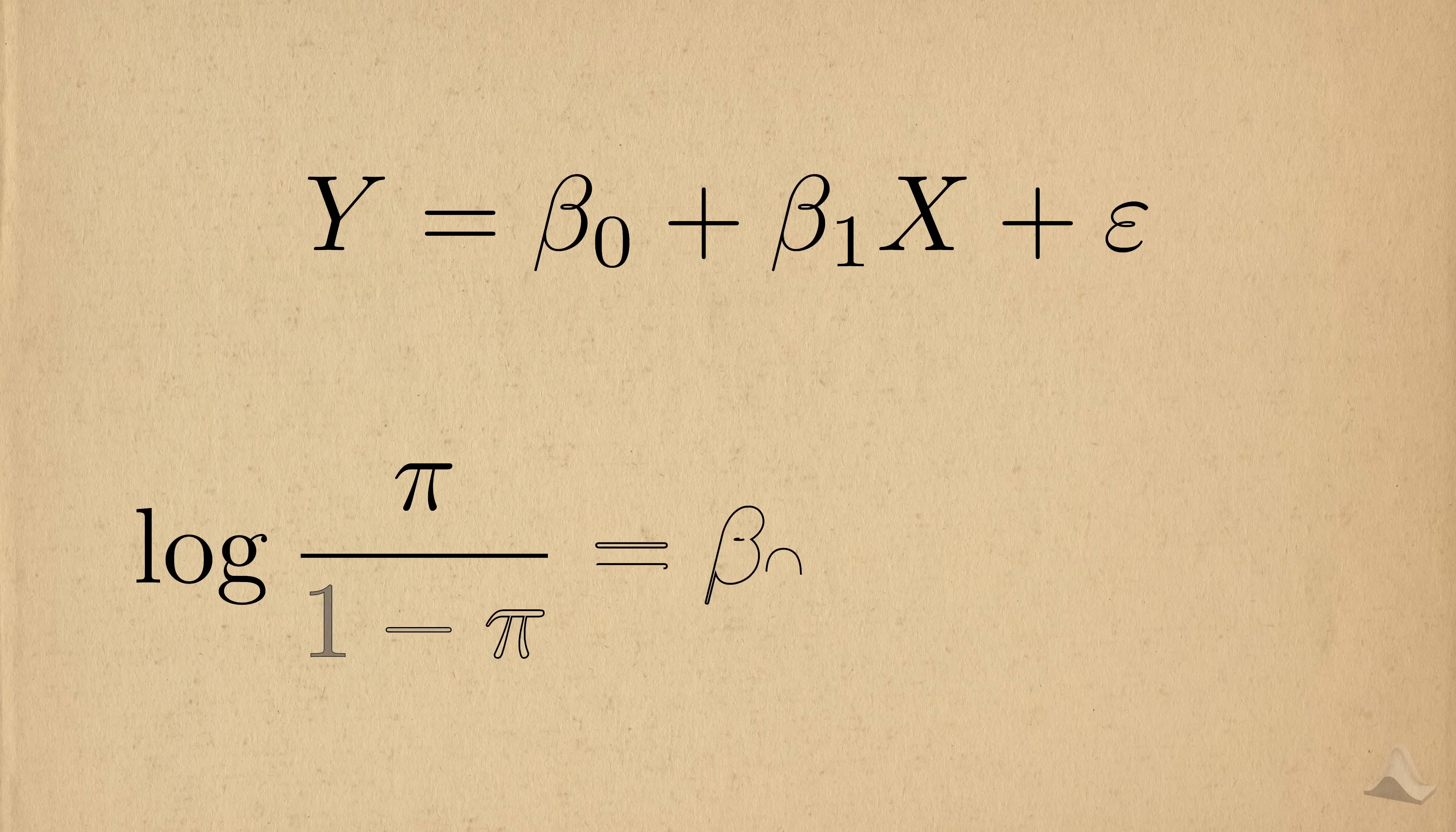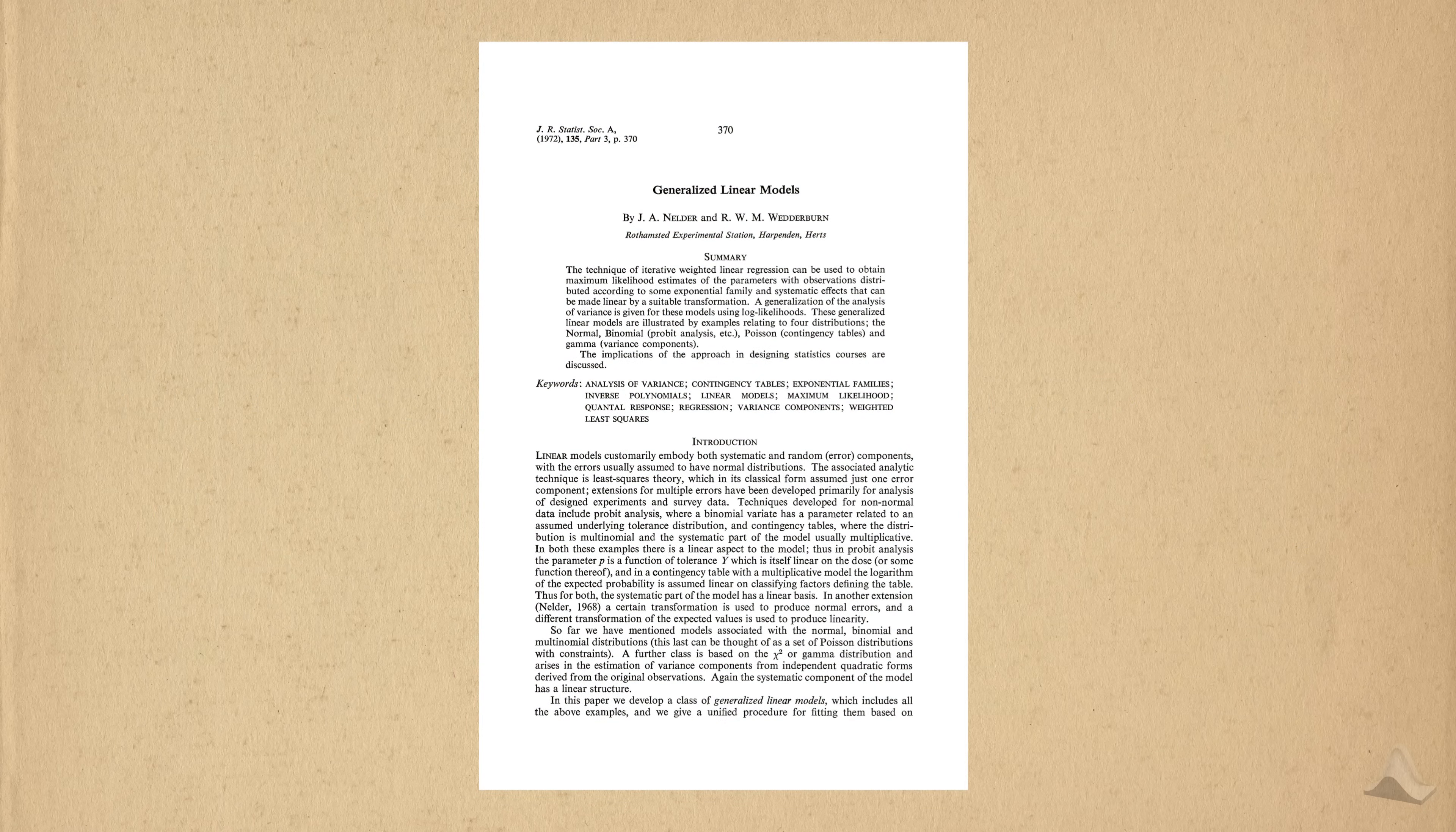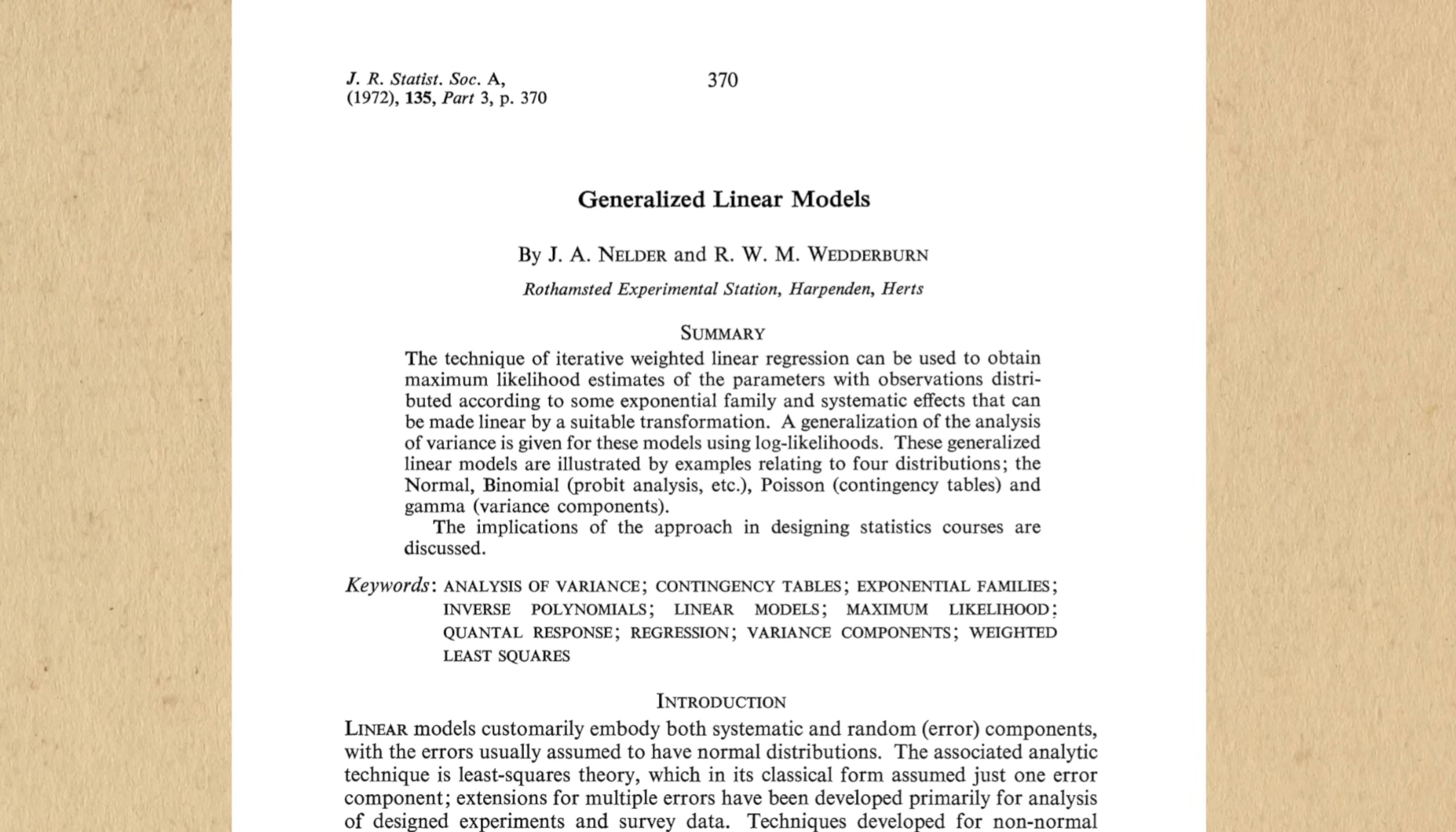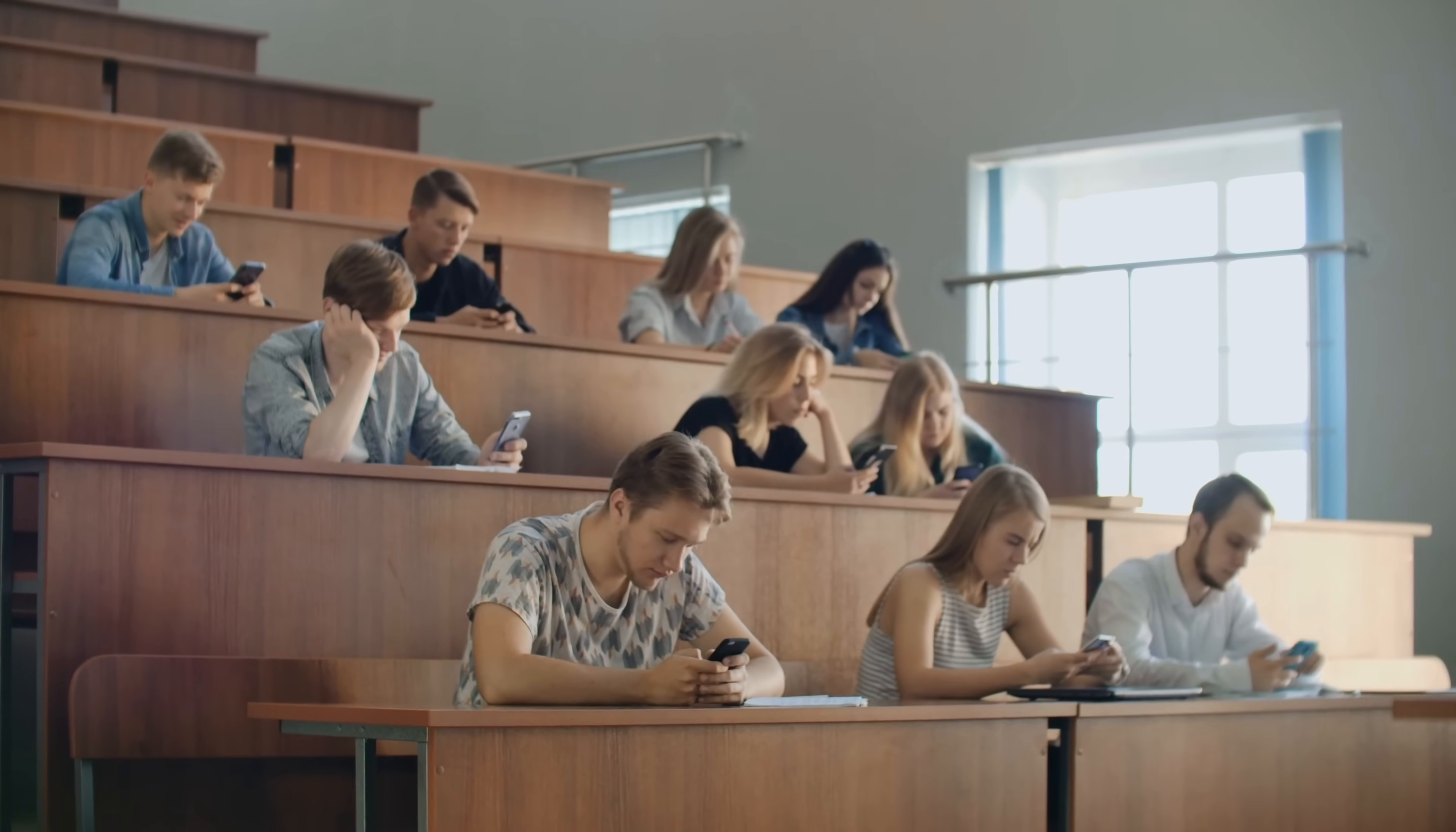People often think about statistics as just existing, like they've always been there for us to use. But statistical models themselves are inventions. And just like any invention, it could become popular and eventually see widespread use. GLMs were introduced by statisticians John Nelder and Robert Wedderburn in a 1972 paper simply titled, Generalized Linear Models. This makes GLMs younger than my own parents, which is kind of crazy to say out loud. Nowadays, GLMs are a mainstay in statistics education and helped drive a lot of research that's published today.